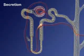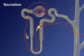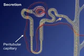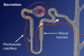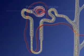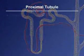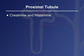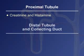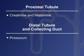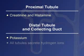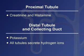In tubular secretion, substances move from the plasma in the peritubular capillaries back into the filtrate in the renal tubules. The proximal tubule secretes creatinine and histamine, and the distal tubule and collecting duct secrete potassium into the filtrate. All the tubules actively secrete hydrogen ions to regulate the pH of the body fluids.